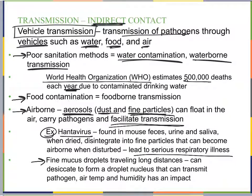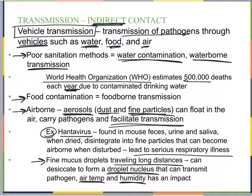Airborne transmission also includes fine mucus droplets. Unlike droplet transmission — which is within one meter — airborne droplets travel greater than one meter. They can desiccate to form a droplet nucleus that still carries the pathogen. Factors like air temperature and humidity affect how long something can float in the air, but these droplet nuclei can travel long distances.